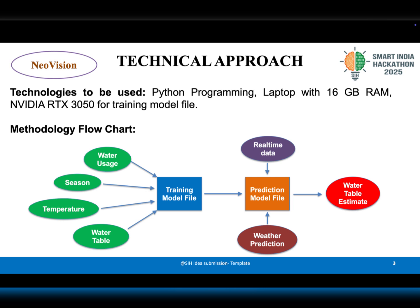Additional inputs include temperature and seasonal usage patterns. These inputs flow into a prediction model that generates accurate forecasts about future groundwater levels.